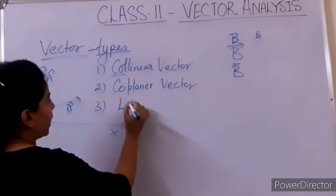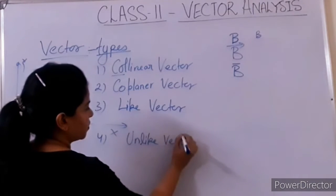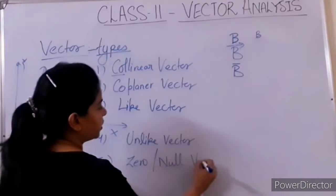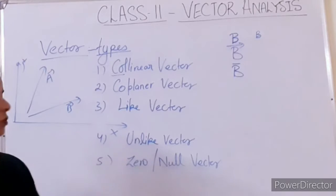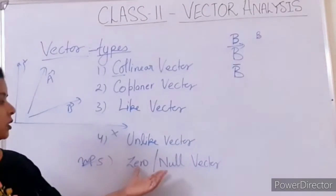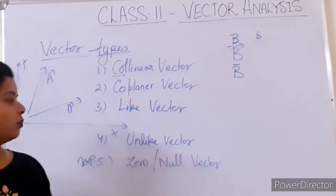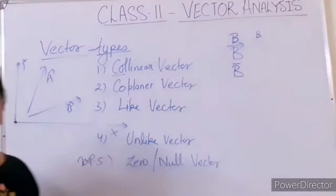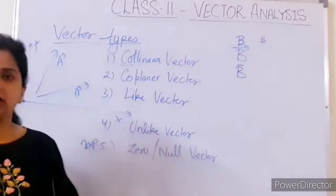The third kind is like vector, and the fourth is unlike vector. Then we have zero vector and null vector. A null vector is one which has zero magnitude and zero direction — it is essentially an origin vector. This kind of vector is called the null vector or zero vector.